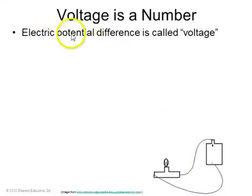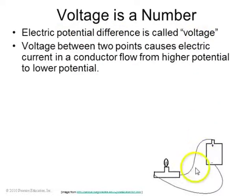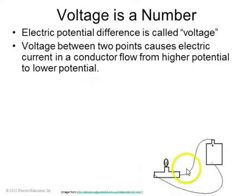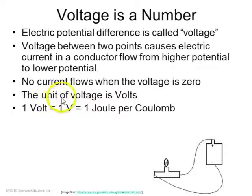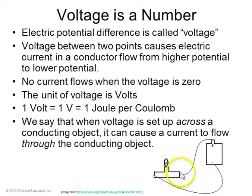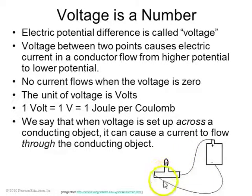Voltage is also a number. Electric potential difference is the same as voltage. The plus terminal of the battery is at 1.5 volts; the negative terminal of the battery is at 0 volts. So there is a voltage of 1.5 volts across this light bulb. If there was no voltage, there would be no current. The unit of voltage is volts, and 1 volt turns out to be equal to 1 joule per coulomb. When a voltage is set up across this light bulb, the current flows through it.